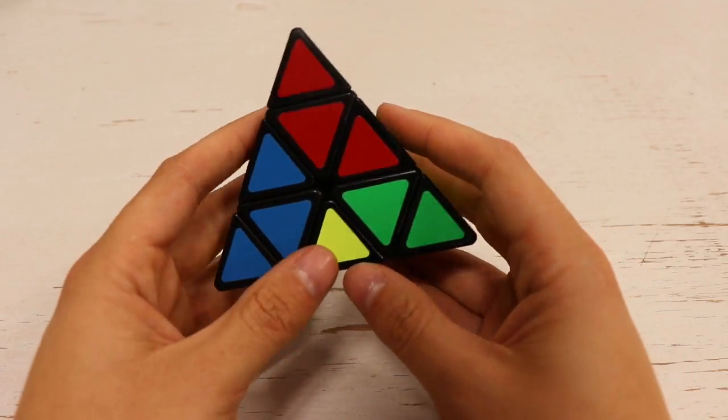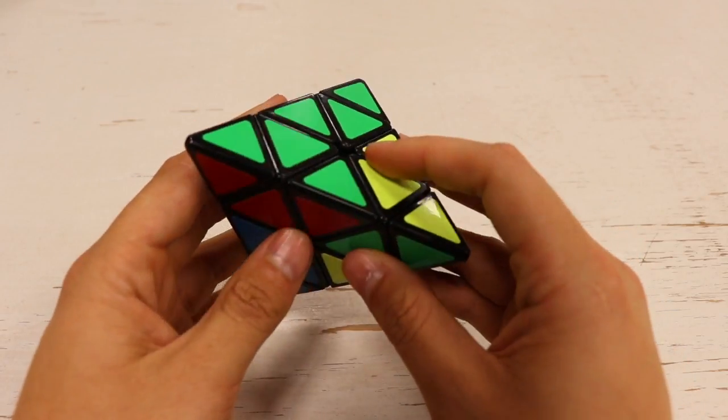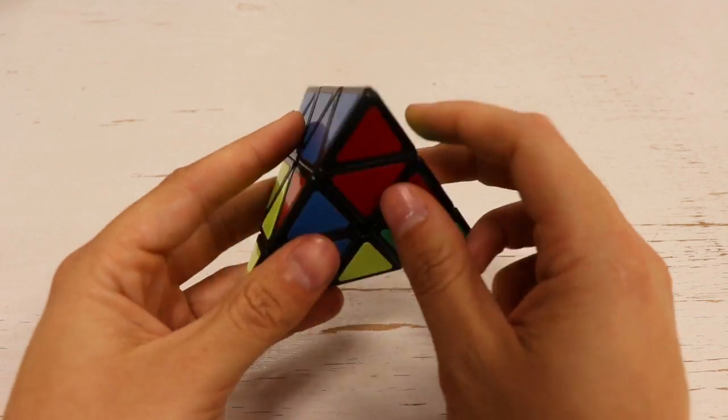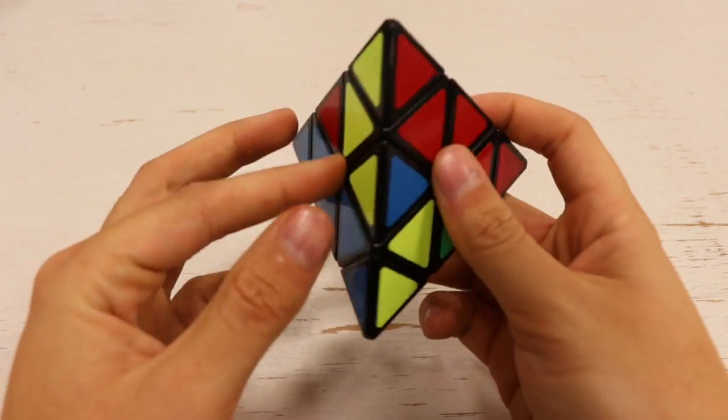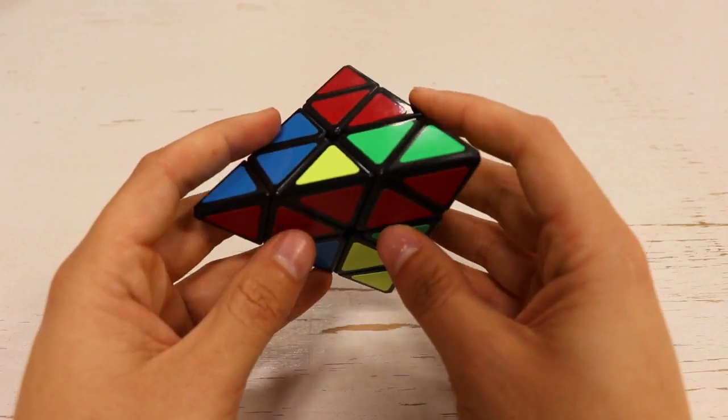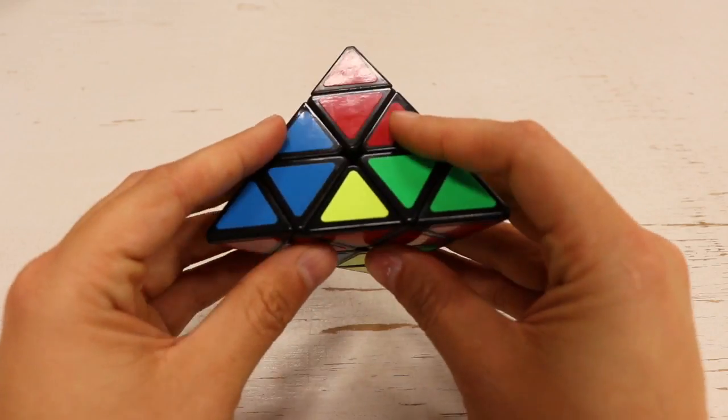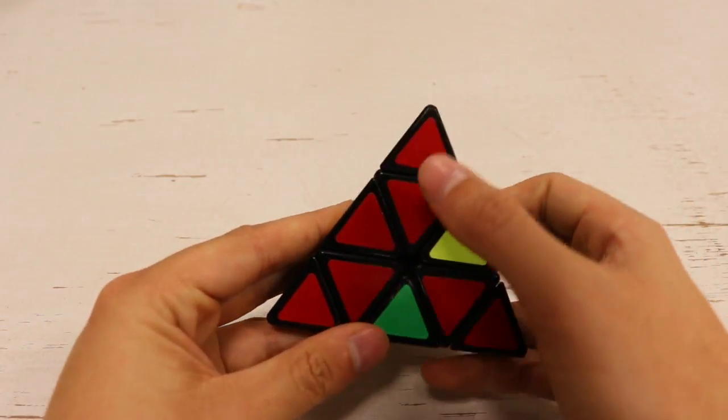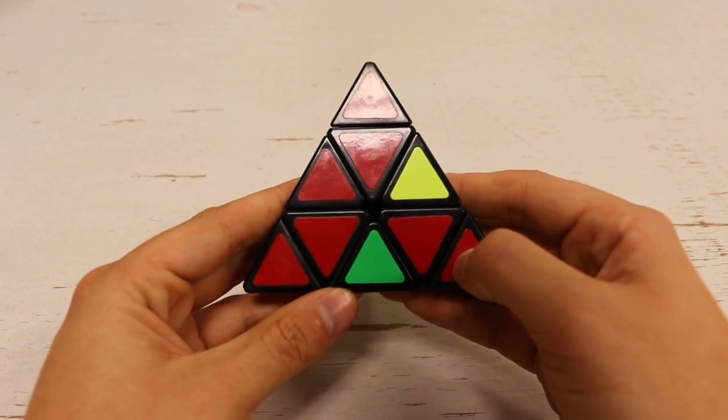The next thing we want to do is, in my case, I always solve the red side first. So we need to find here's one set of red and the other two are down here. This will be really easy to line these up. We're just going to rotate this direction and rotate this direction. Now we have all the red here, all the red here, and all the red here.